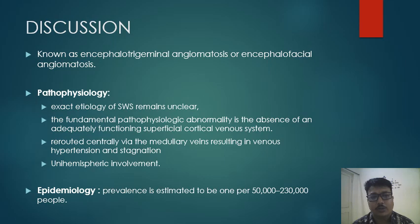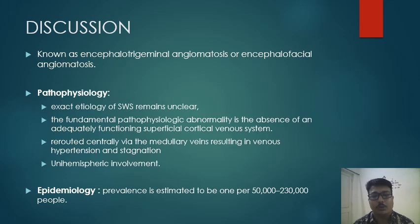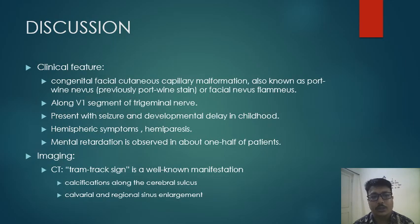Sturge-Weber syndrome, also known as encephalotrigeminal or encephalofacial angiomatosis, has an unclear exact pathology. However, the proposed mechanism is that the fundamental pathological abnormality is the absence of an adequately functioning superficial cortical venous system, causing blood to be rerouted centrally via medullary veins, resulting in venous hypertension and stagnation. Prevalence is estimated at 1 per 50,000 to 2,300,000 people. Clinical features include congenital facial cutaneous capillary malformation (port wine nevus or facial nevus flammeus) along the V1 segment of the trigeminal nerve, seizure, developmental delay, macrocephaly in childhood, and mental retardation observed in one half of patients.